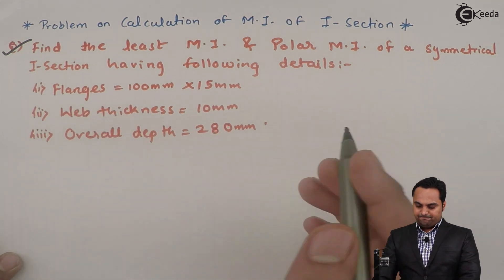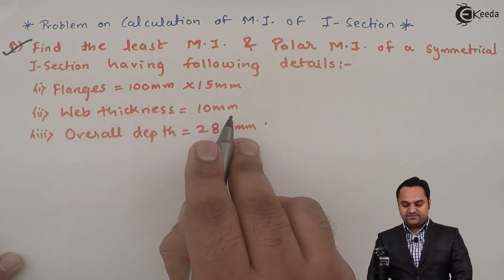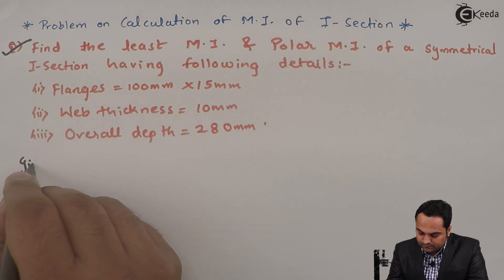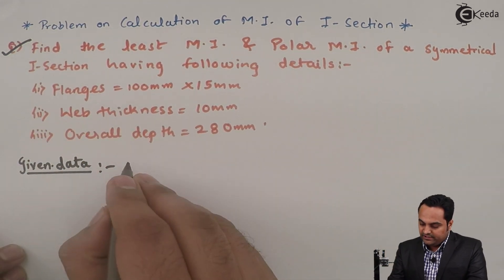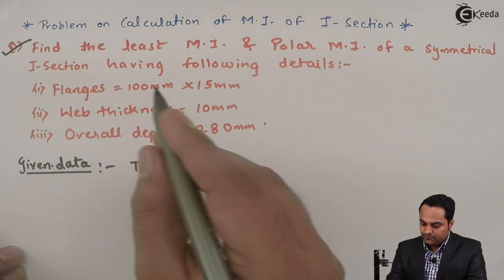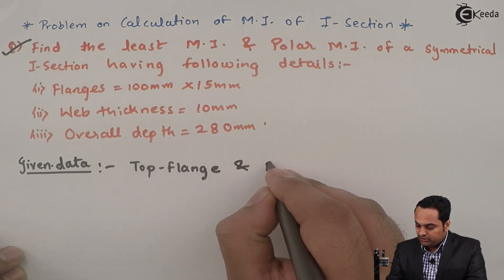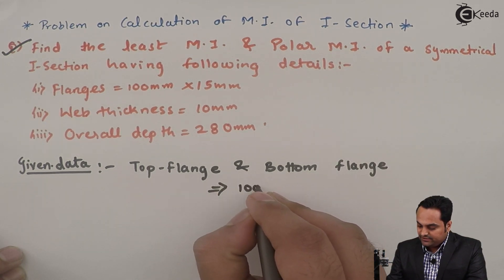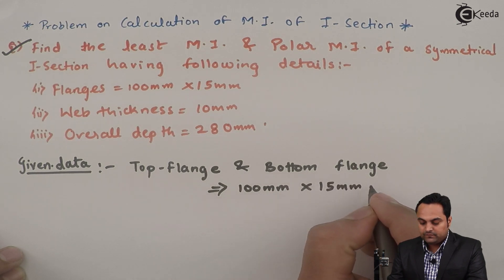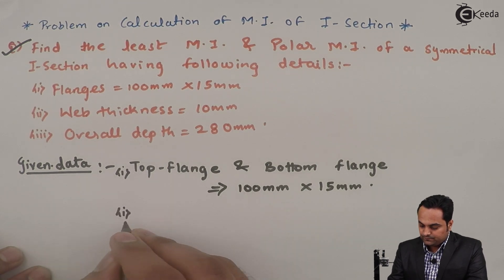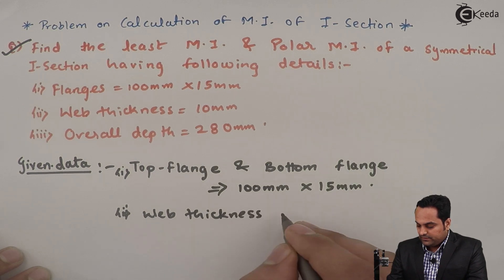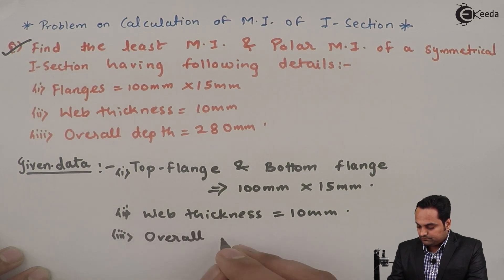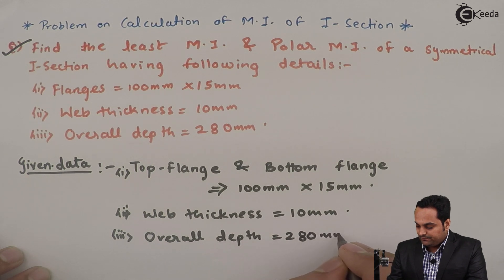The flanges are having 100 mm x 15 mm area, web thickness is 10 mm, and the overall depth is 280 mm. Since there is an I-section, there will be a top flange and bottom flange, both having the same area that is 100 mm x 15 mm. Next, web thickness is 10 mm, then overall depth is 280 mm.